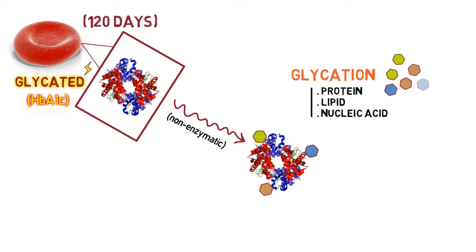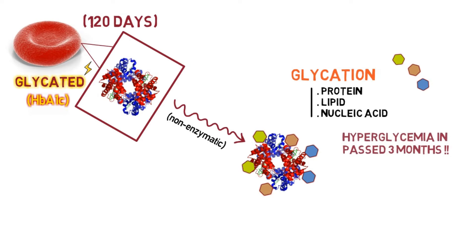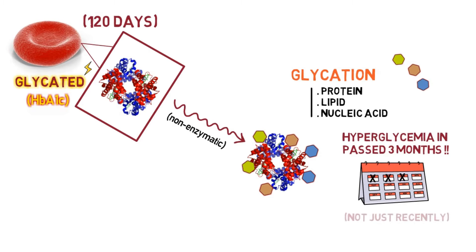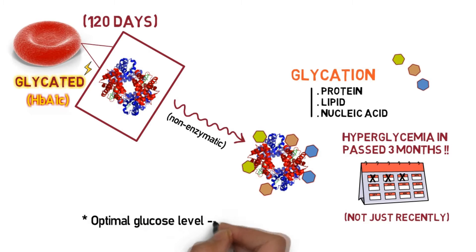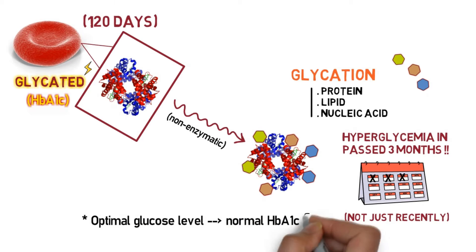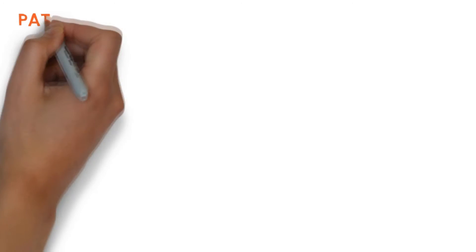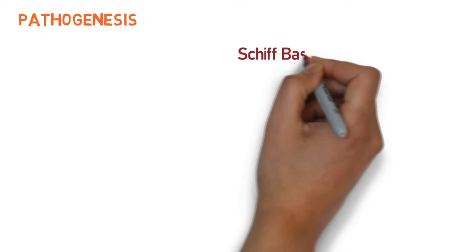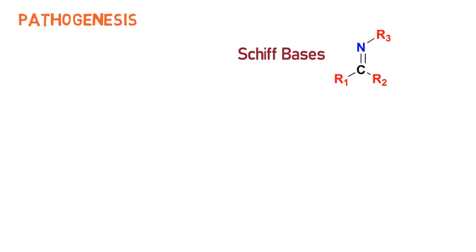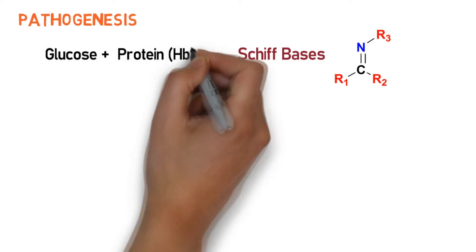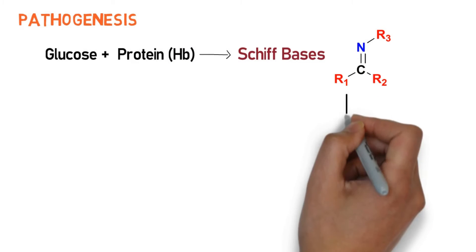A higher amount of glycated hemoglobin indicates excessive sugar levels within the bloodstream during the past three months, while optimal glucose levels produce a normal amount in healthy individuals. The pathogenesis of glycation begins with Schiff base as the initial product, followed by a condensation reaction that occurs between glucose and the beta chain of hemoglobin.